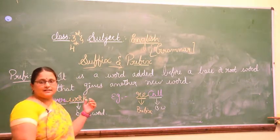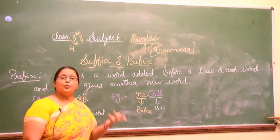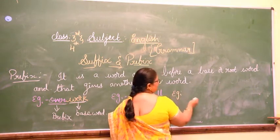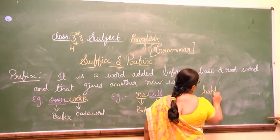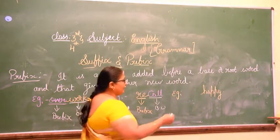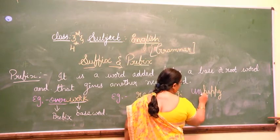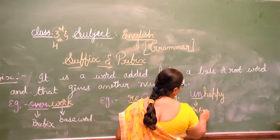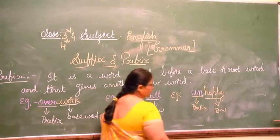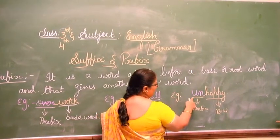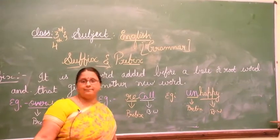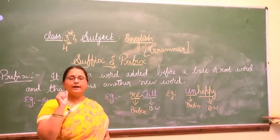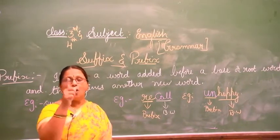Sometimes, children, by just adding a prefix we can also make the opposite words. For example, 'happy' is the base word. If I add 'un', this 'un' becomes the prefix. So for 'happy', when you add 'un' it becomes 'unhappy' — the opposite word.